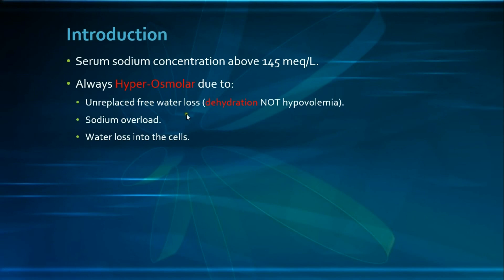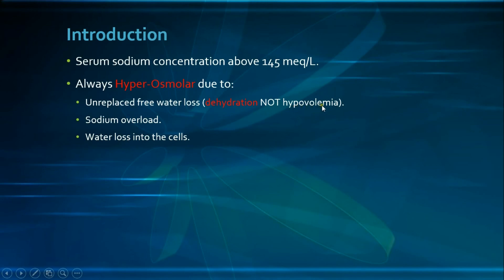There are three mechanisms by which hypernatremia occurs. The first is unreplaced free water loss, known as dehydration — not hypovolemia — because dehydration means free water loss without the solutes, whereas hypovolemia means losing free water along with the solutes, and hypovolemia usually results in hyponatremia. The second mechanism is sodium overload, as in salt intake without water or administration of hypertonic solutions.